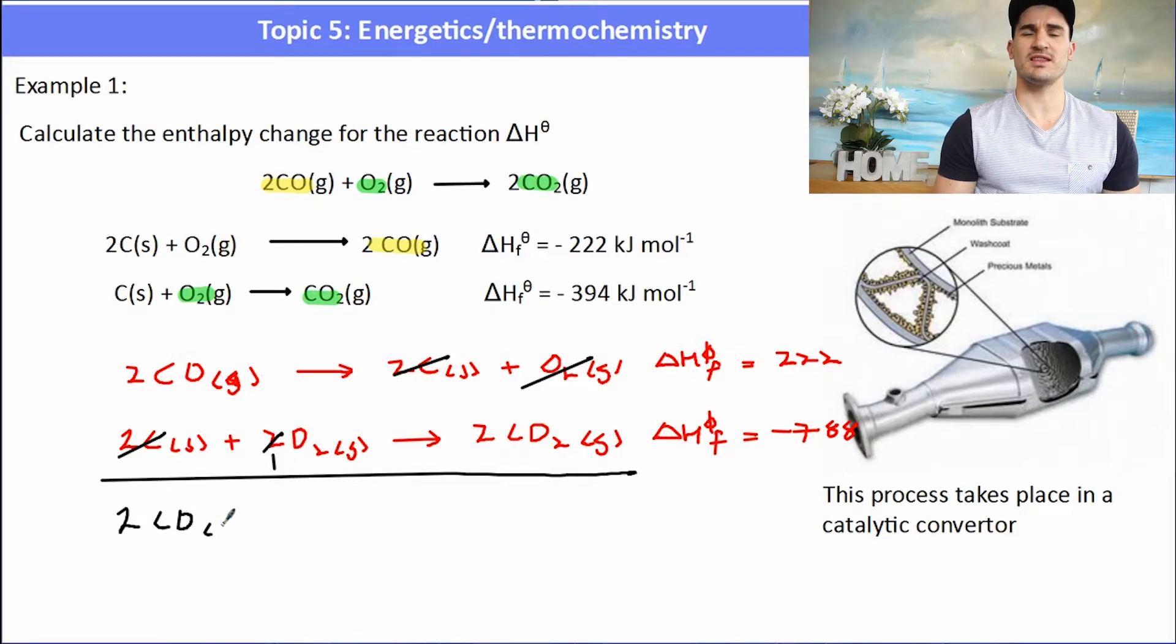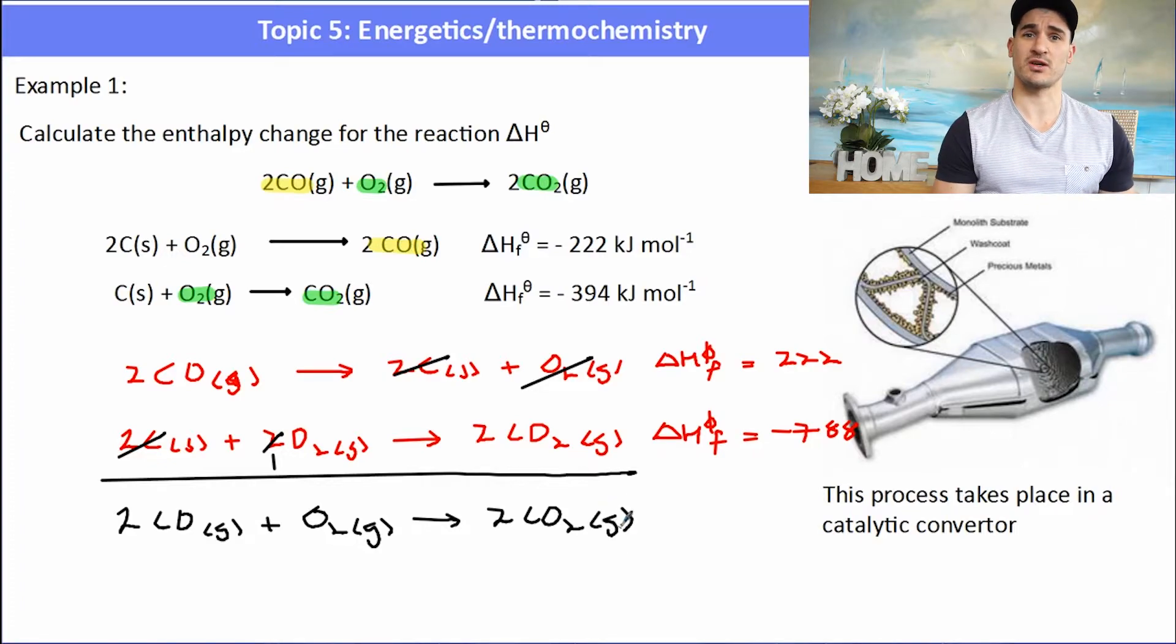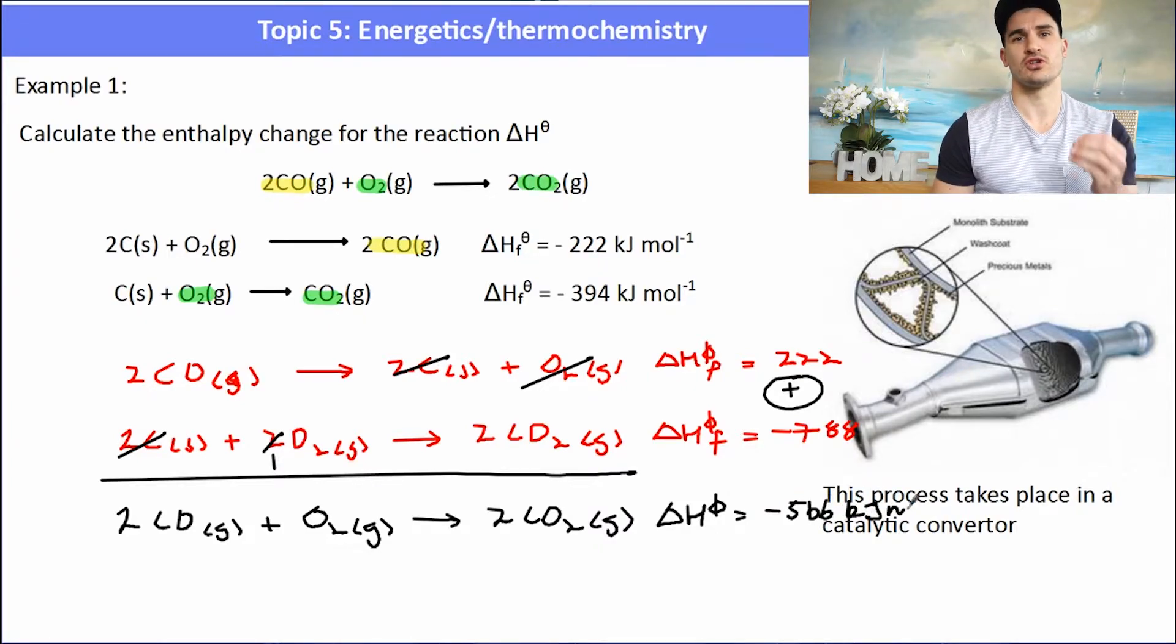What's left over should give me the overall equation. So I've got 2 CO gas plus O2 gas goes to 2 CO2 gas, which is the correct equation, the equation that I want. Now to find the delta H, I simply just add in both of the steps. I add them together. So we've got 222 plus 788, which is 566 kilojoules per mole. Don't forget to add those delta H's at the end.